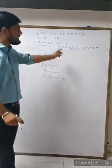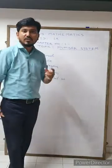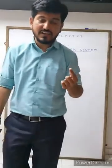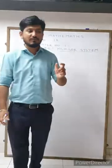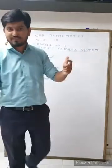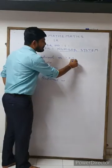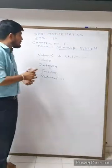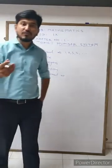In fifth and sixth standard, we first study natural numbers. Whenever we have to count any things, we always start from which number? We start from one. For example, if you have to count your class strength, we start with one, two, three. Your teacher gives you roll numbers — roll number one, two, three — they are not given from zero. So numbers one, two, three, four, five, six, seven, eight, nine, ten are all known as natural numbers.